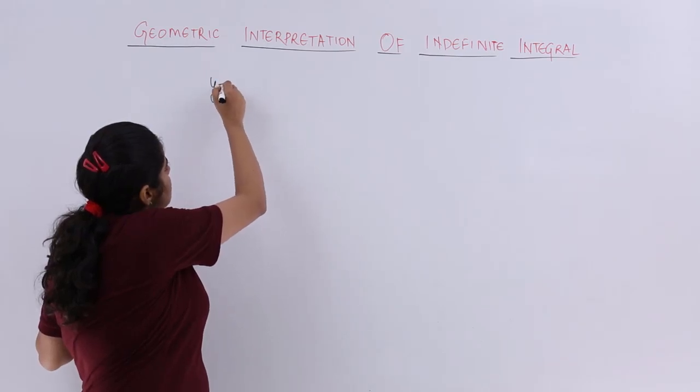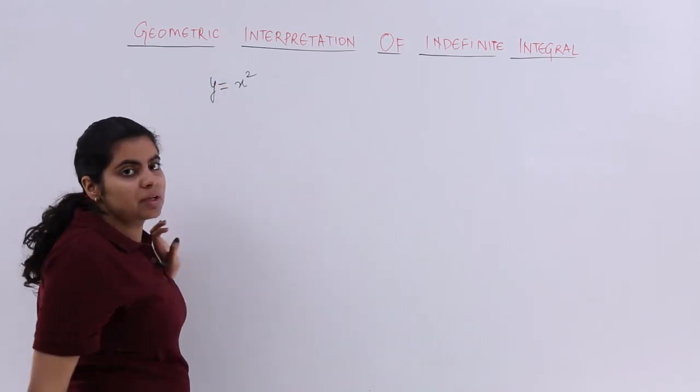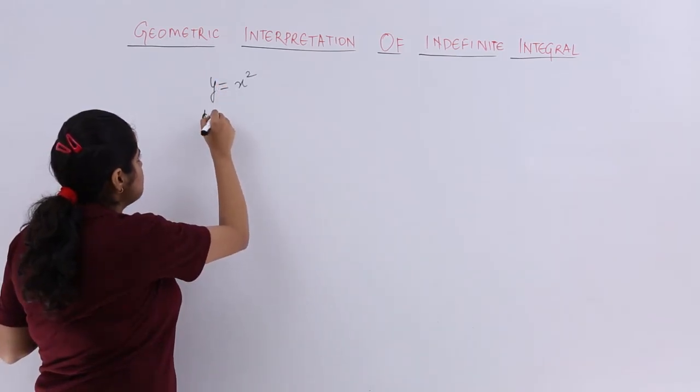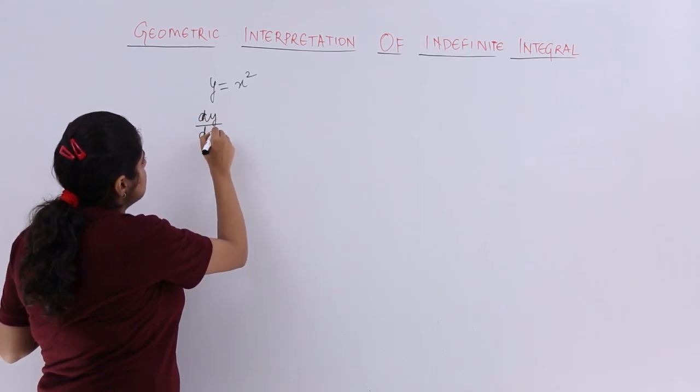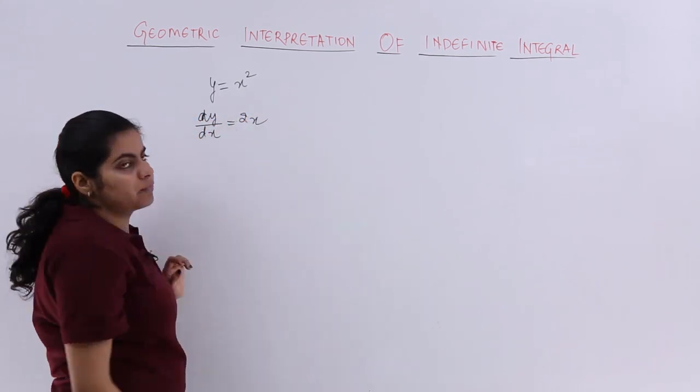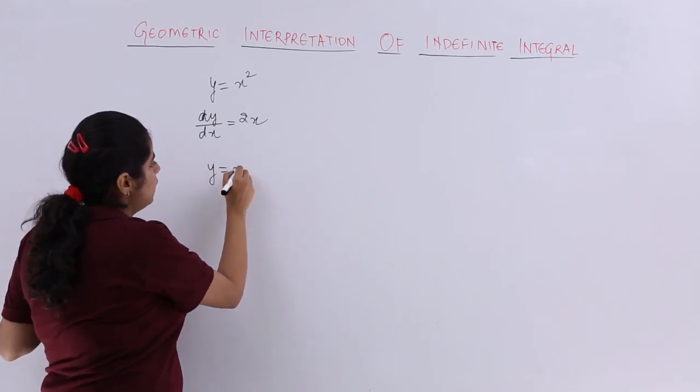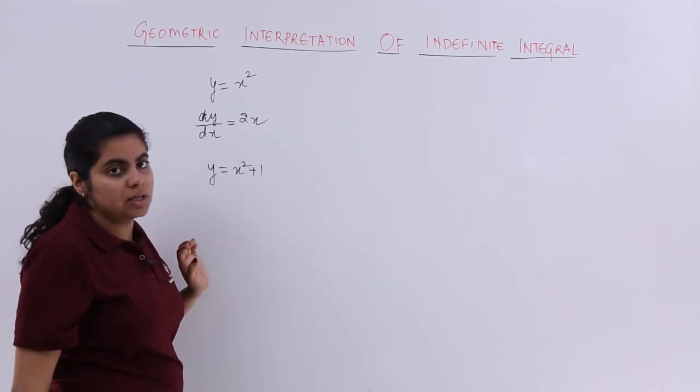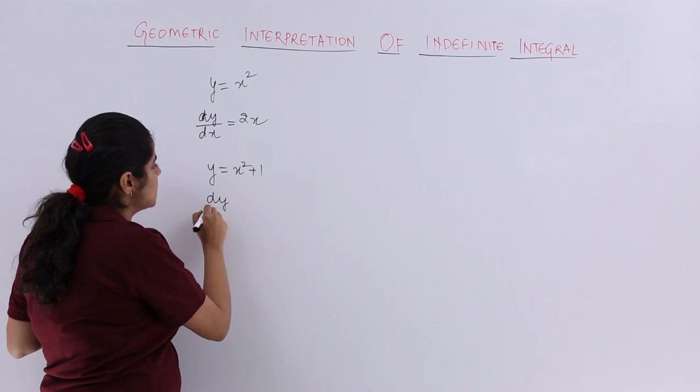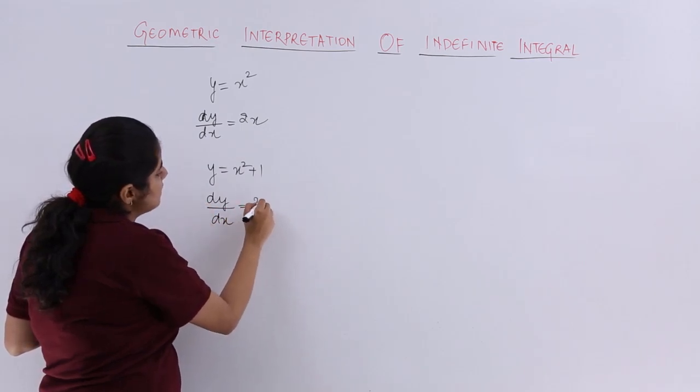I have y equals x square. For this y, what is dy by dx? My dy by dx should be equal to 2x. But suppose my y is equal to x square plus 1. Now what is my dy by dx? Again my dy by dx is 2x.